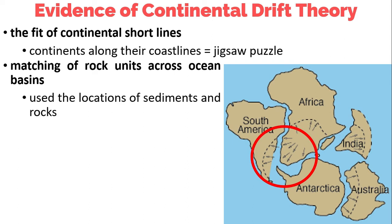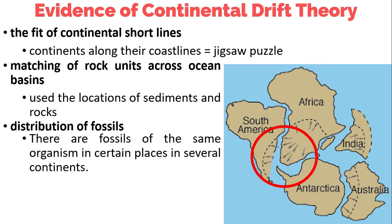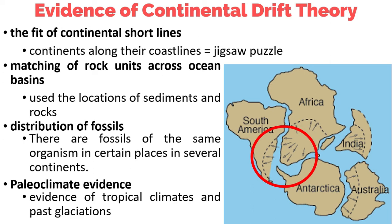Next is the matching of rock units across ocean basins. He used the locations of sediments and rocks, and also stated the distribution of fossils. Fossils are remnants of organisms preserved in rock that are indicative of marine and terrestrial organisms. He said that there are fossils of the same organisms found in certain places across several continents.